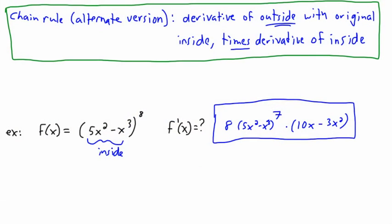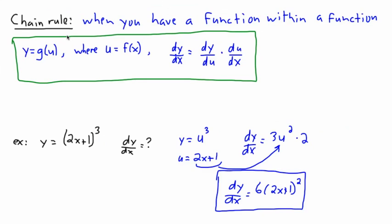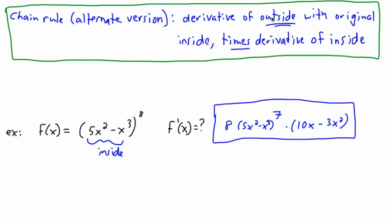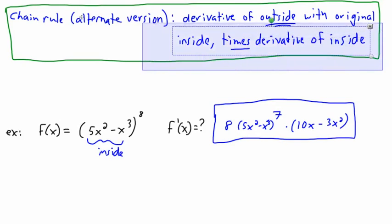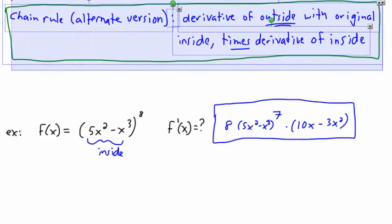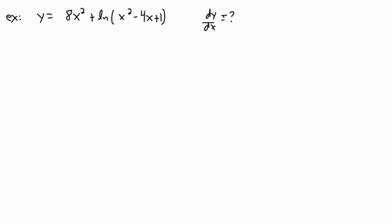More examples of chain rule. Remember, the chain rule applies when you have a function within a function. We can find the derivative using this trick: the derivative of the outside with the original inside, times the derivative of the inside.